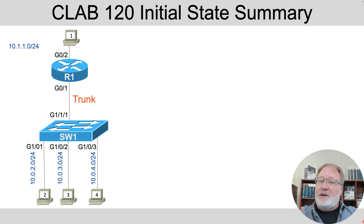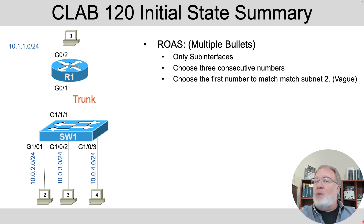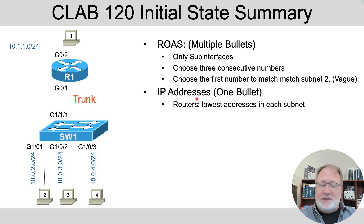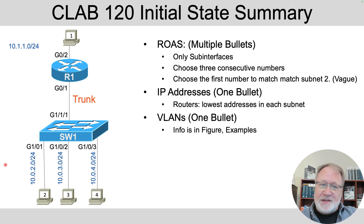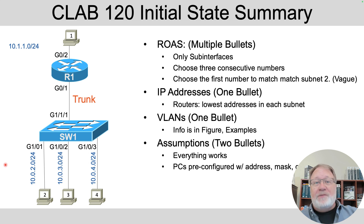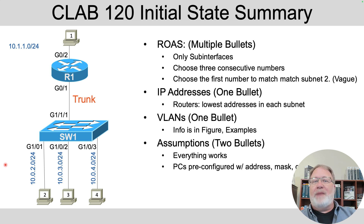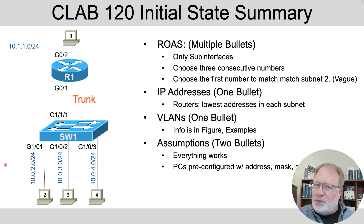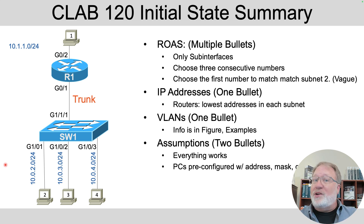I'm going to talk about the configuration that solves the lab. Here's a diagram of the lab straight out of the blog post. There are requirements on that page — it talks about subinterfaces using three consecutive numbers, IP addresses to match the scheme shown in the lower part of the diagram, and VLANs separately. This is a review of what you should have already done. If you need more background, read the lab on the blog site or watch the intro video. I'm going to show you the config that results from those requirements.